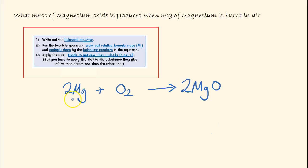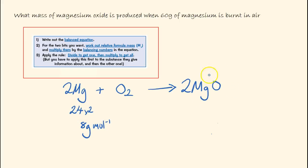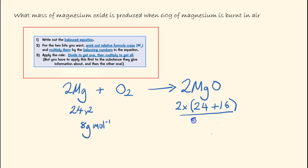Next we work out the relative formula mass of the two parts we're interested in. Magnesium has a relative atomic mass of 24, and we multiply by the balancing number — the stoichiometry — so 2 times 24 gives us 48 g/mol. For magnesium oxide, magnesium is 24 plus 16 for oxygen, giving 40. Multiplied by the balancing number of 2, that gives us 80 g/mol.